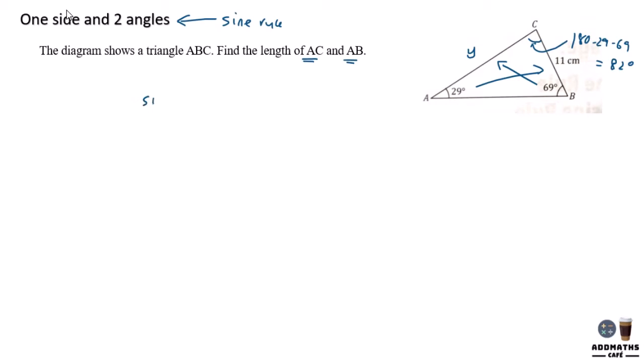So sine 69 is to y and sine 29 is to 11. So y will be sine 69 divided by sine 29 over 11. So let's try to find this answer: sine 29 divided by 11 and sine 69.